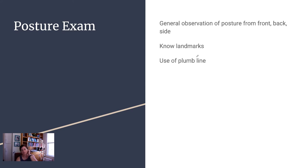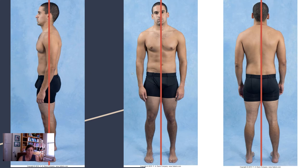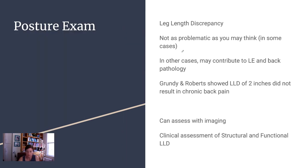For our postural exam we'll do observations from the front (anterior), posterior, and lateral views. You need to know the landmarks you're looking for and make good use of a plumb line. Know where your lateral, anterior, and posterior landmarks need to line up relative to that plumb line, and be able to document deviations. One fairly common deviation is leg length discrepancy — I commonly abbreviate this as LLD.